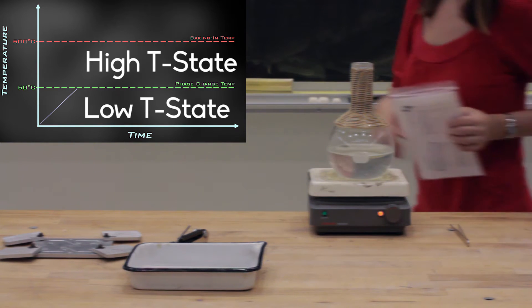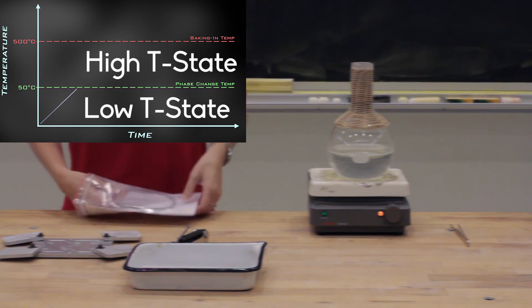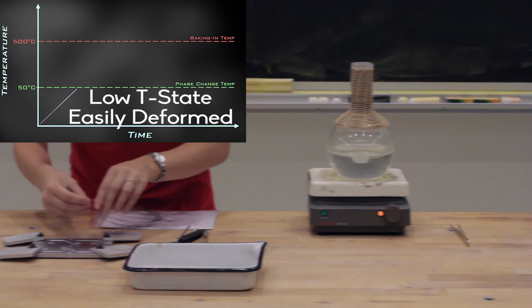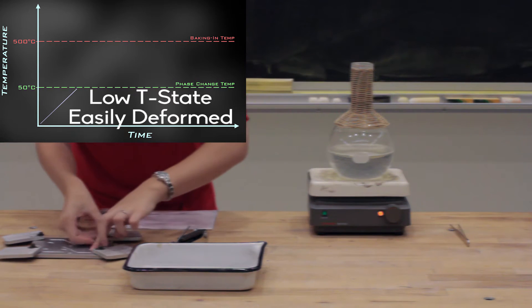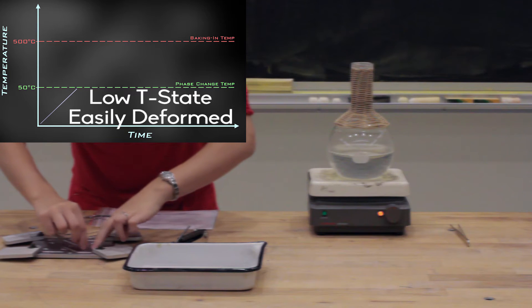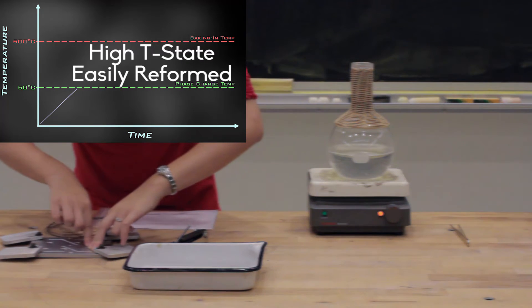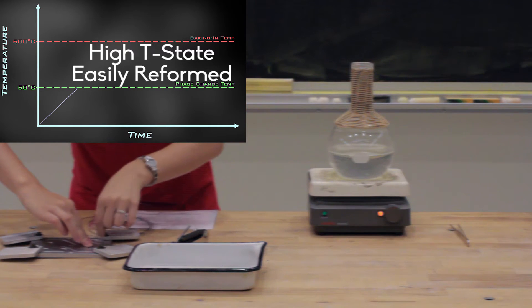The transition between the two states occurs at approximately 50 degrees Celsius. In the low temperature state, the structure consists of planes that are easily deformed in any direction. When heated to the high temperature state, the planes slide back into place and the nitinol returns to its original form.